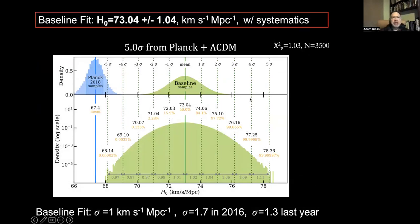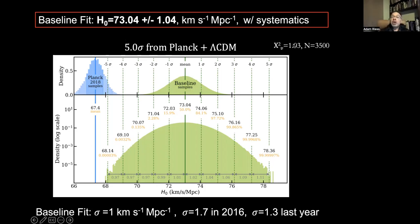Jumping to the punchline: the answer we get is H₀ = 73.04 plus or minus 1.04, including systematic uncertainties. By running 100 million MCMC chains, we can sample the tails and see to a pretty good precision that we are really five sigma from the predicted value of the Hubble constant using Planck and Lambda CDM. We get a very good fit to our data with no excess variance, and the uncertainty has now come down from 1.7% in 2016.